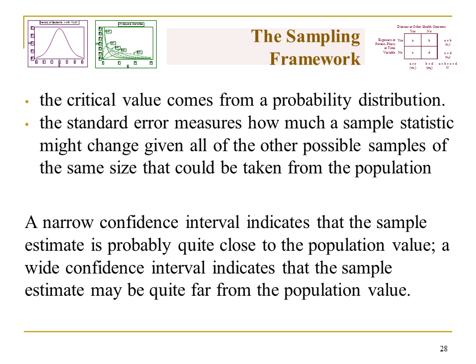A narrow confidence interval indicates that the sample estimate is probably quite close to the population value. Confidence intervals are narrower when sample size is larger — if we have a larger sample, we're more likely to have an estimate quite close to that population value. Whereas a wide confidence interval indicates that the sample estimate might actually be quite far from that population truth.